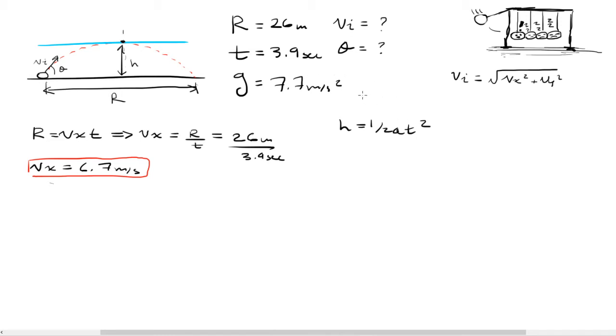So half of 3.9 is going to be 1.95. So the height is going to be equal to one-half gravitational acceleration, which is 7.7, times 1.95 squared. And since we're finding the height, we don't have to worry about the negativity of the acceleration, since we always know that height isn't going to be a negative value. So if we multiply all this together, we get that the height is about 14.6 meters.